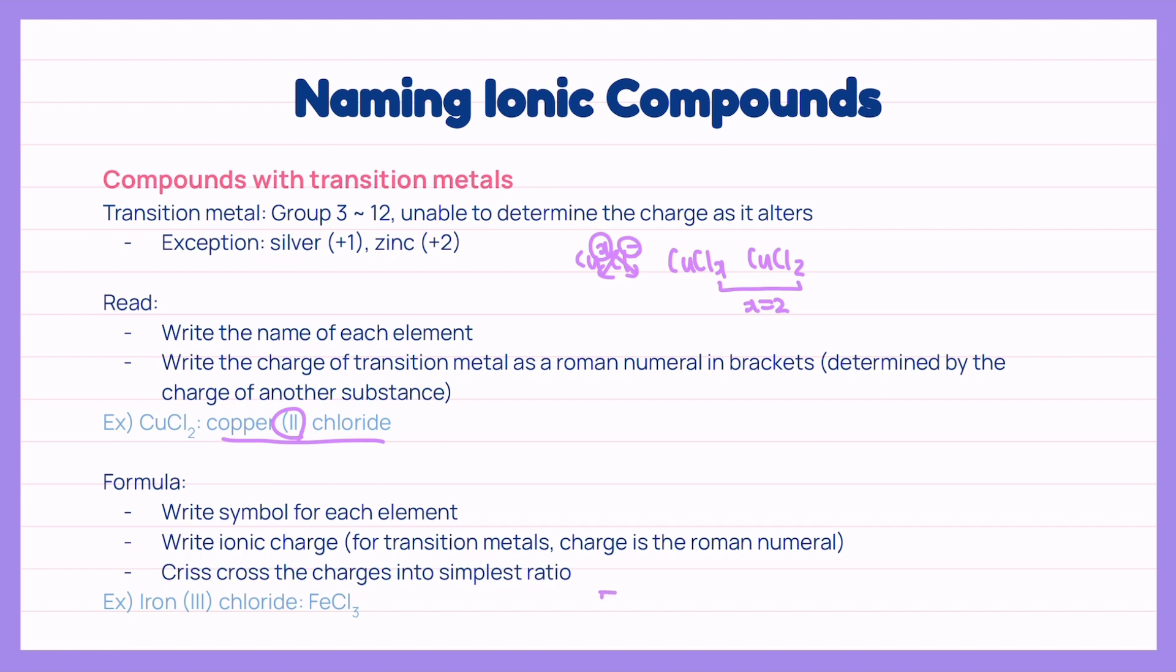We write down iron with the charge of 3 plus as shown in the roman numeral and then Cl which has a negative 1 charge. It becomes FeCl3.